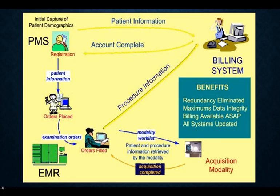For radiology billing, they need patient information, procedure information, and the exam report before they can issue a bill. Also, there are two separate bills in radiology: the bill from the hospital for doing the procedure, and the bill from the radiologist for reading the exam. These are often called technical fees and professional fees. The technical fee is the charge for doing the exam; the professional fee is the charge for reading the exam.